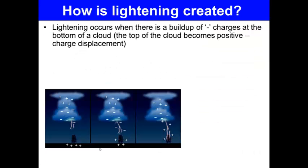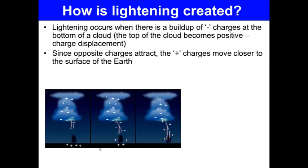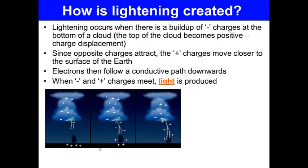How is lightning created? Lightning occurs when there is a buildup of negative charges at the bottom of a cloud. The top of a cloud becomes positive. This is due to charge displacement. Since the opposite charges attract, the positive charges move closer to the surface of the earth. Electrons then flow in a conductive path downwards. When positive and negative discharges meet, light is produced. So that's your lightning.